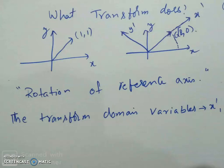What does a transform do? A transform simply provides another perspective of the same signal, as I told you. It means the reference axes are going to change. Let us see an example. There is a vector (1, 1) in the Cartesian coordinate system.